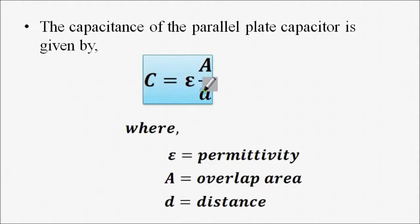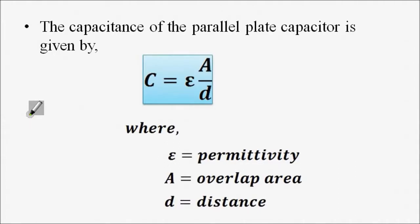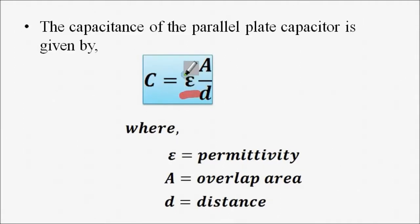We know that capacitance C is equal to εA/D, where ε is the permittivity or dielectric constant, A is the overlap area — the portion of the two plates facing each other — and D is the distance between the plates. Here, A and D are constant; the only thing changing with respect to moisture is the dielectric constant ε.